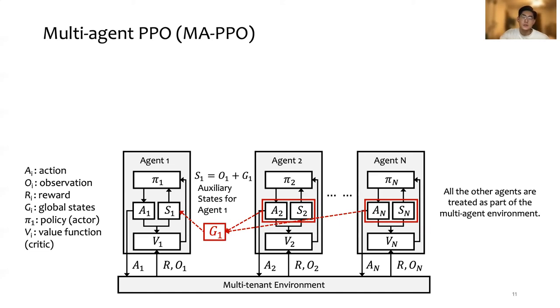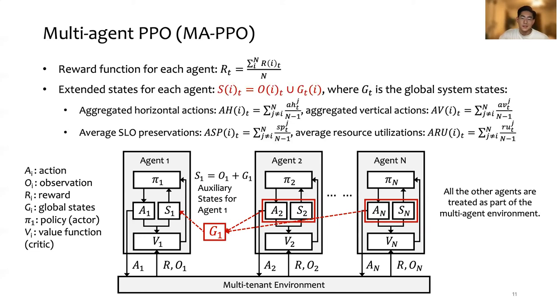First, we change the reward function of each agent to be a team reward, which is the average reward across agents. Second, we extend the state for each agent to be the concatenation of agents' local observation and the global system states, G_t.